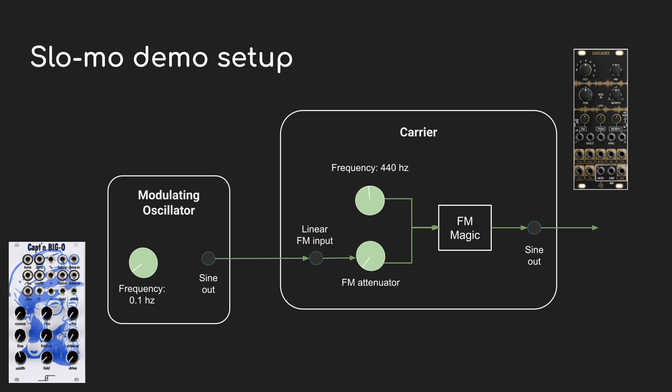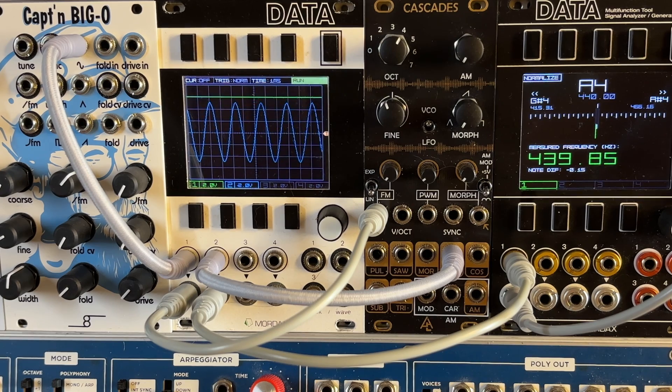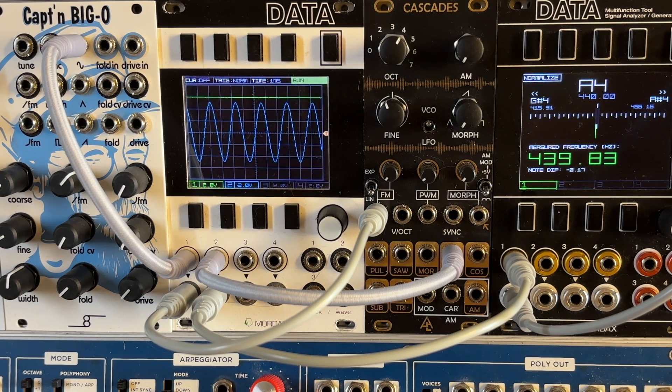Typically FM happens with the carrier and modulator both running at audio rate, but to get started I want to start off slow. I have two oscillators here. One is the After Later Cascades — that's going to be our carrier, running at 440 hertz with a sine wave. That's A above middle C, and we're going to spend a lot of time listening to that tone. The other is the Captain Big O, and I have it turned all the way down as low as it'll go, acting as an LFO. On the oscilloscope you can see the green line going up and down — that's the LFO rising and falling slowly.